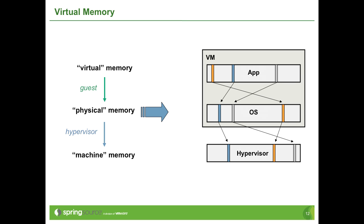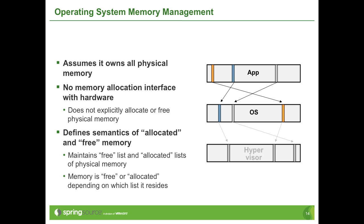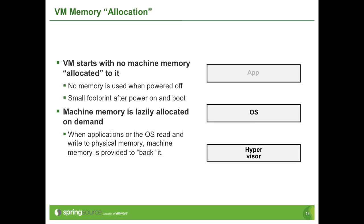A typical application allocates memory from the operating system when it needs it, and explicitly frees the memory back to the OS when it no longer needs it. The operating system is responsible for juggling the physical memory it has available to ensure applications have the memory they need, and therefore needs a framework to keep track of which memory is allocated and which is free.